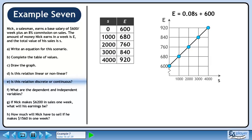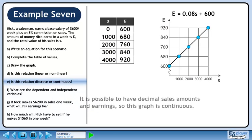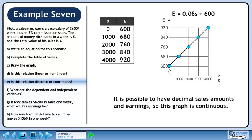In Part E, we are asked, is this relation discrete or continuous? It is possible to have decimal sales amounts and earnings, so this graph is continuous.